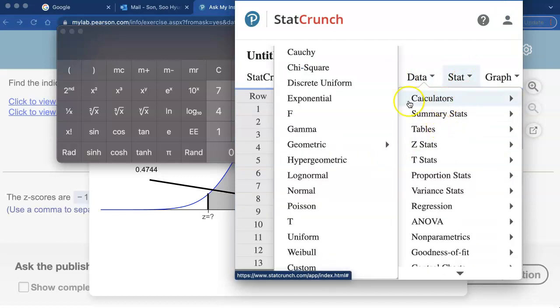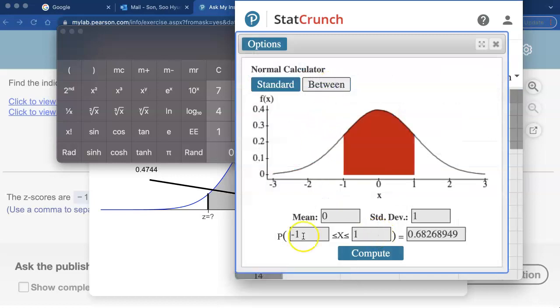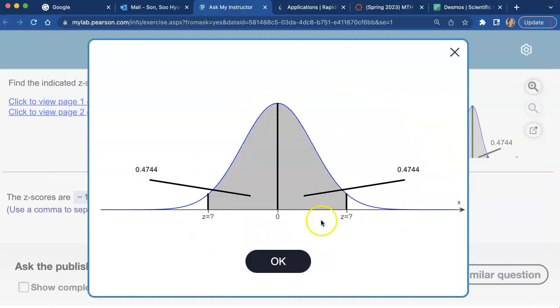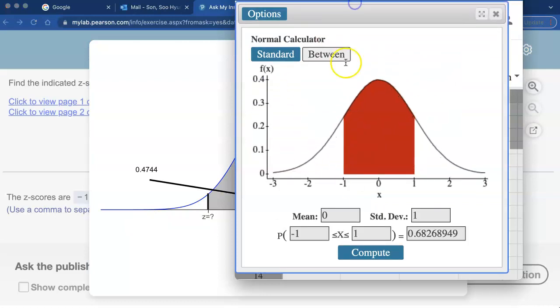Z-scores are coming from standard normal table, a standard normal distribution. So mean of zero is fine and standard deviation is one, two three to the right, one two three to the left. The default setting on StatCrunch is just fine, so keep the mean as zero, standard deviation is one.